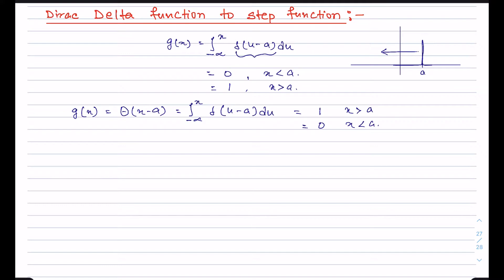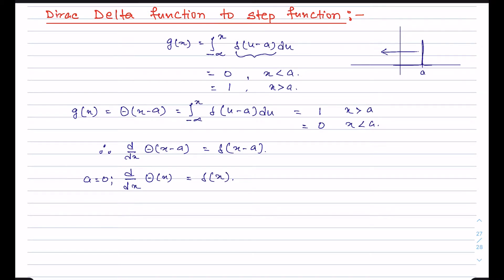On the contrary, you can argue that the delta function must be the derivative of the step function. Therefore, d/dx of theta(x minus a) must equal delta(x minus a). Or for a equals zero, you can say that d/dx of theta(x) equals delta(x) — that is, the delta function defined at x equals zero.